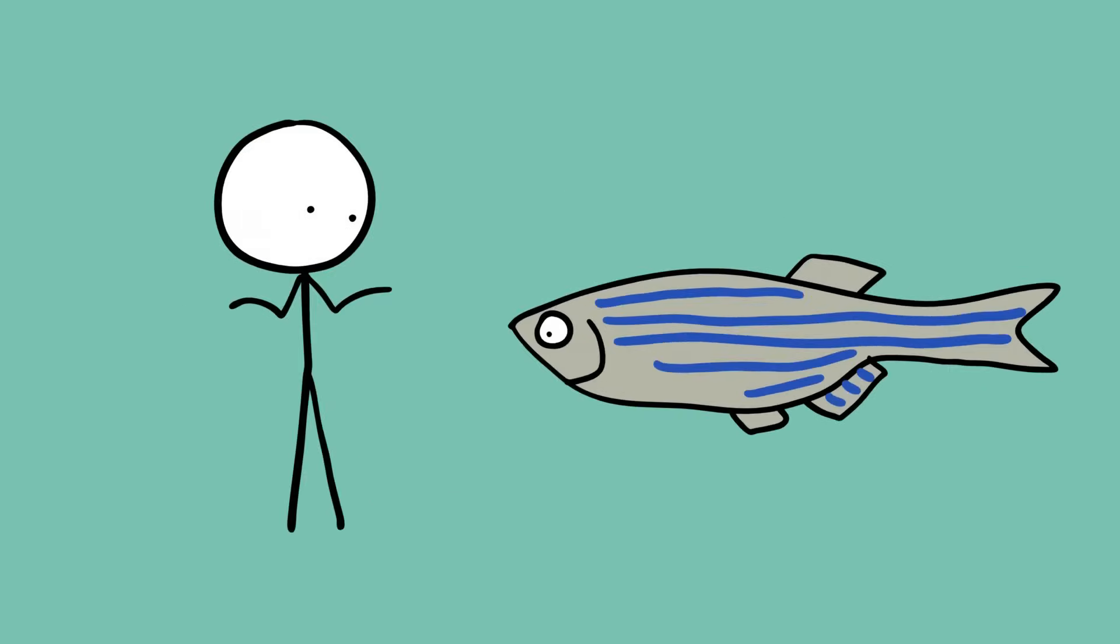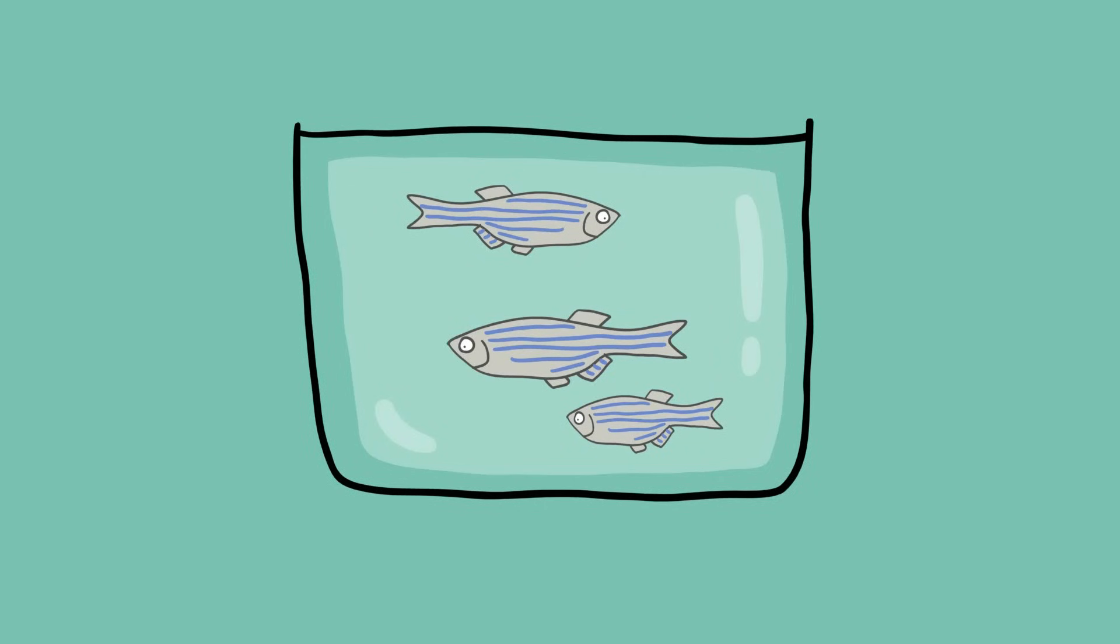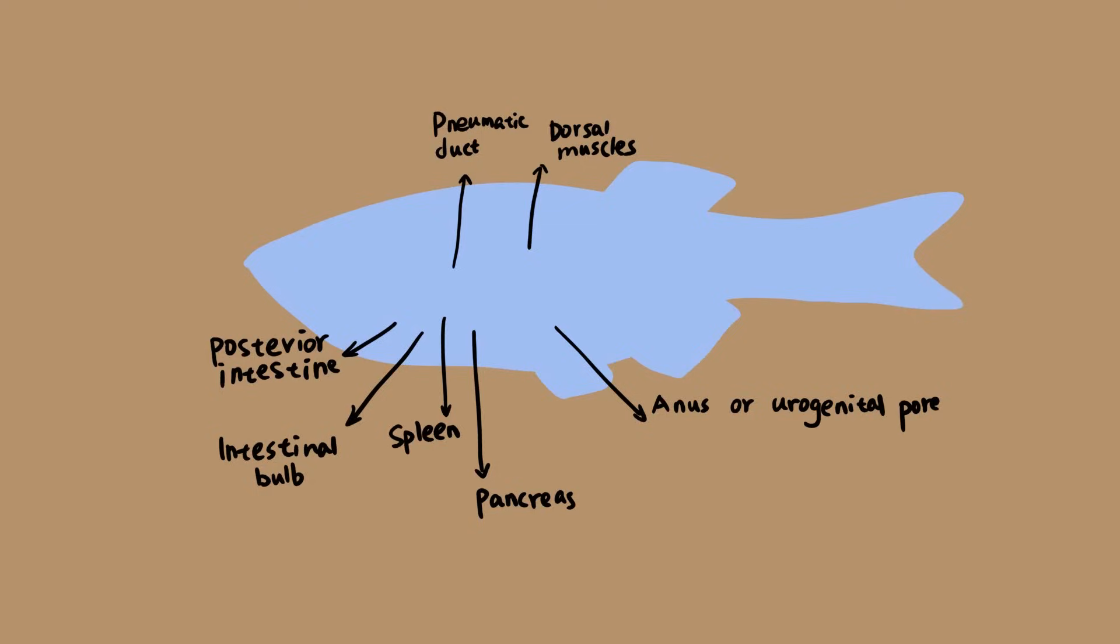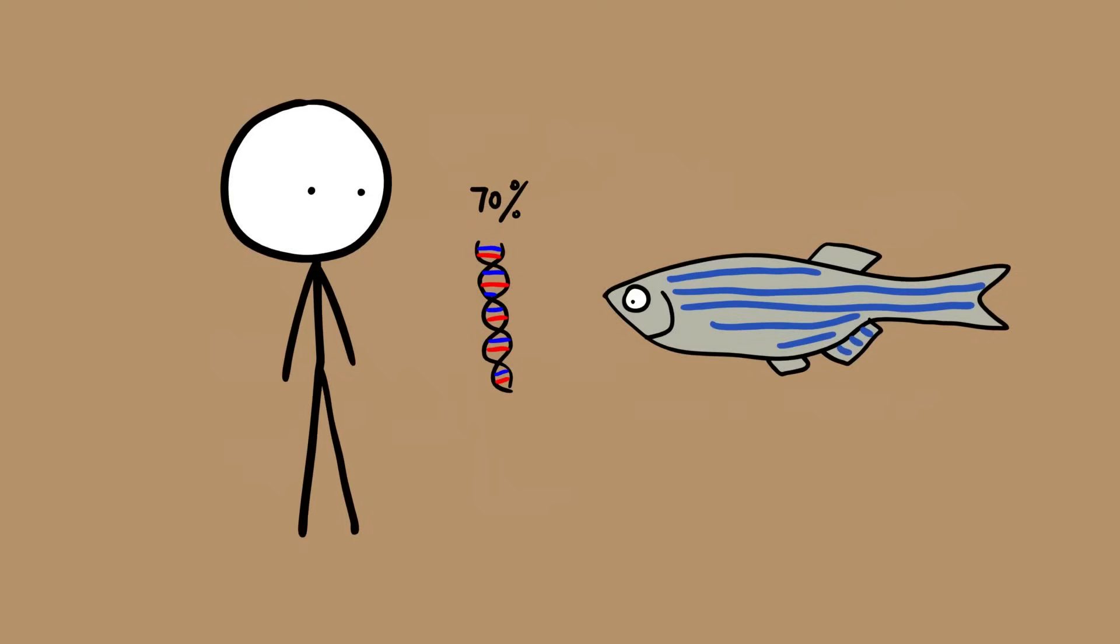You might think that we humans have little in common with zebrafish, but scientists think otherwise. Zebrafish are growing in popularity in medical research labs around the world because of their physiological similarities to humans. For a start, they are vertebrates with a backbone, brain, and spinal cord. They also have a heart, liver, pancreas, kidneys, bones, and cartilage. In addition, 70% of human genes are found in zebrafish.